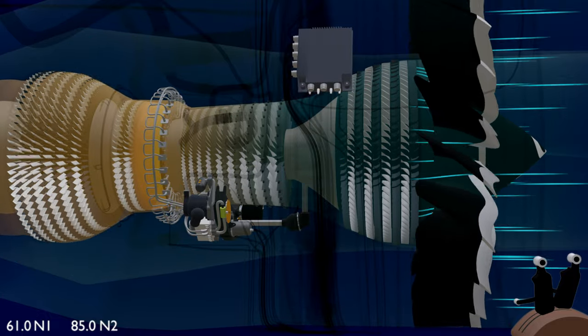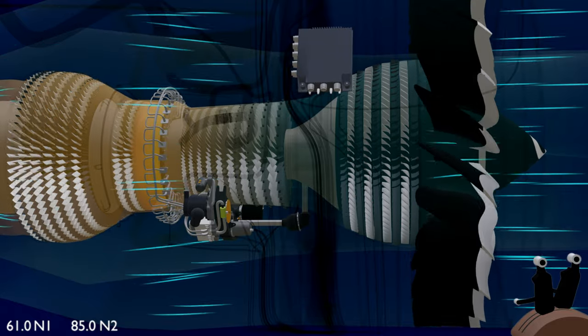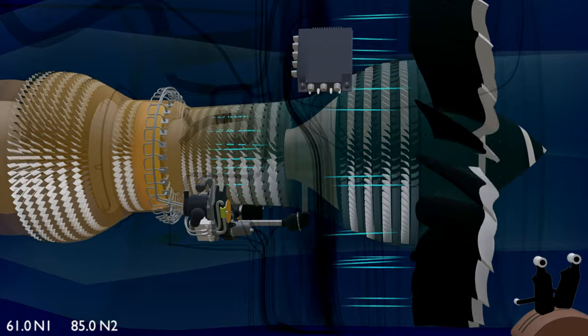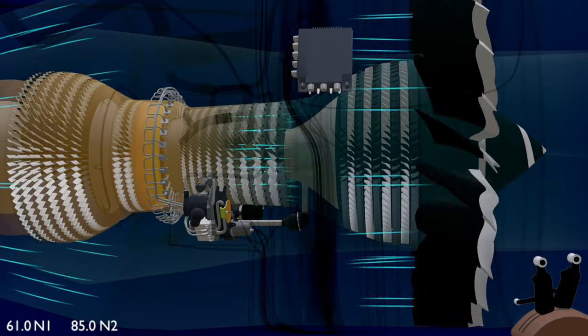The compressor and turbine sections are designed to work at their peak efficiency when the engine is near its maximum thrust rating. The airflow and the blade performance is optimal at the design point. But it's not possible to use the engine at its max rating at all times.